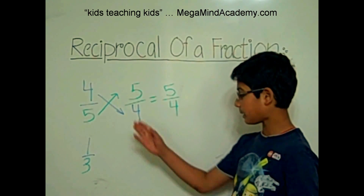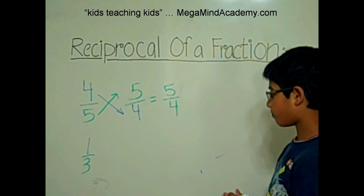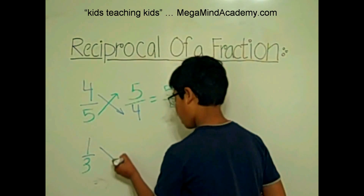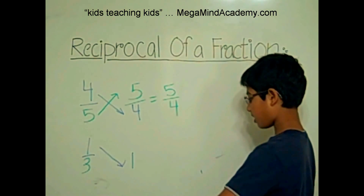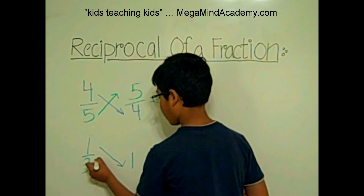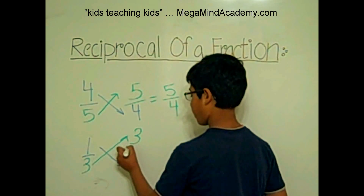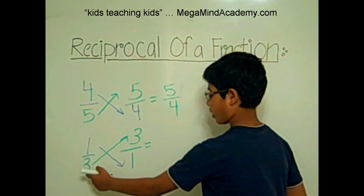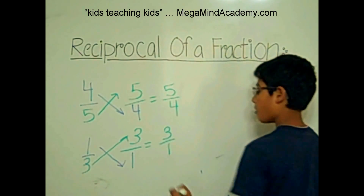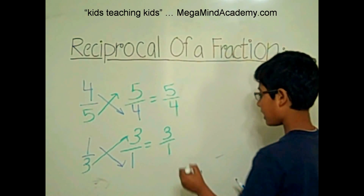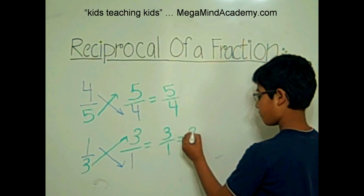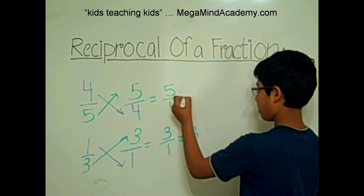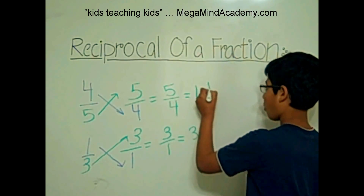Now we will find the reciprocal of 1 third. The 1, which is the numerator, will go down and become the denominator, and the 3, which is the denominator, will go up and become the numerator. So, the change is made, and the reciprocal of 1 third is 3 over 1, but 3 over 1 can be simplified into 3. Also, for 5 over 4, it can be simplified into 1 and 1 fourths.